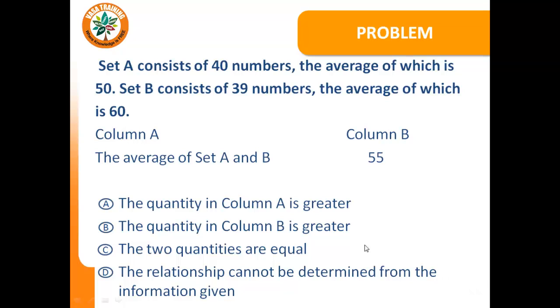Set A consists of 40 numbers, the average of which is 50. Set B consists of 39 numbers, the average of which is 60.